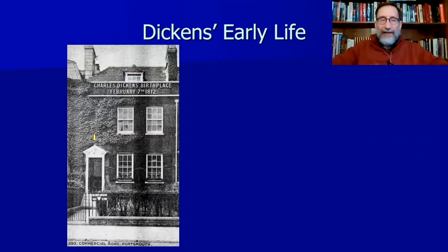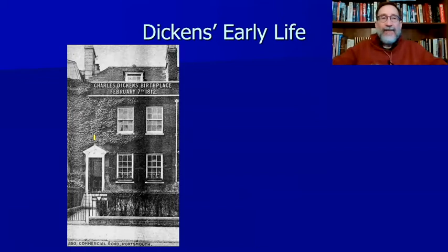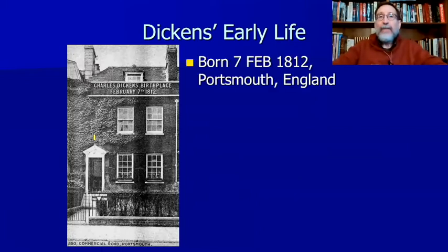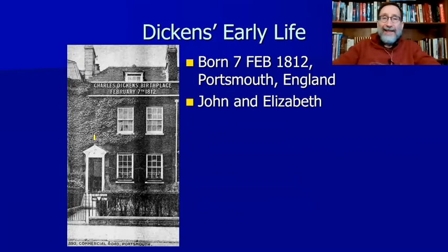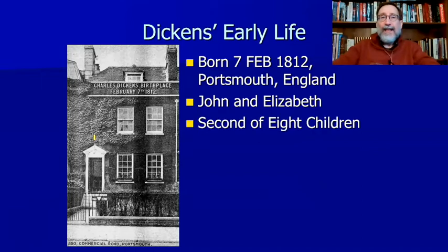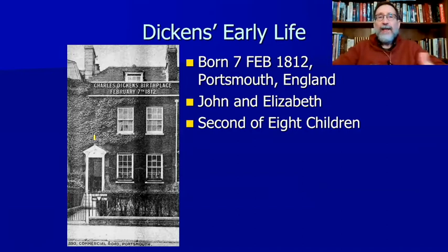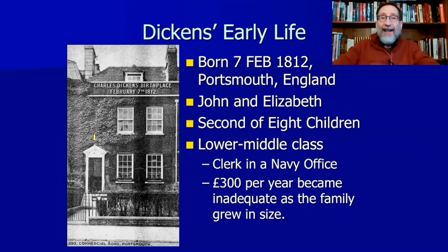Let's talk about Charles Dickens' early life. This is actually the house that Charles Dickens was born into. His father was a clerk working for the Navy. He's born on February 7th, 1812 — you don't need to know those dates. His parents were John and Elizabeth. The family grew considerably: when Charles is born he's the second child, but eventually six more children follow. As the family increases in size, unfortunately the Navy income does not, and they start to struggle.